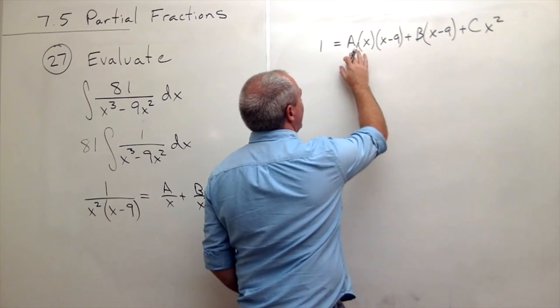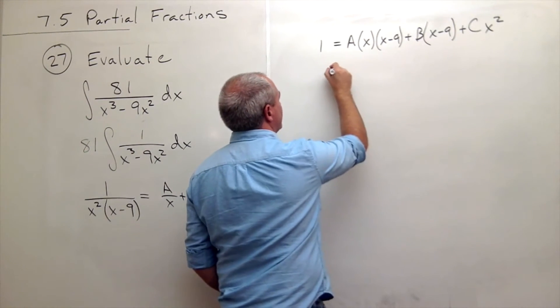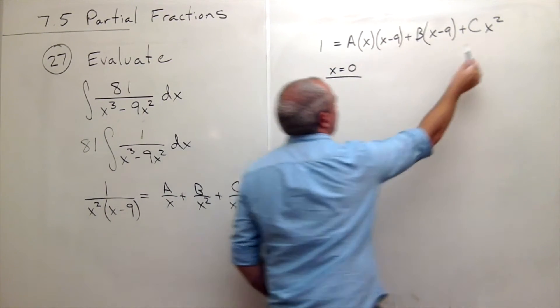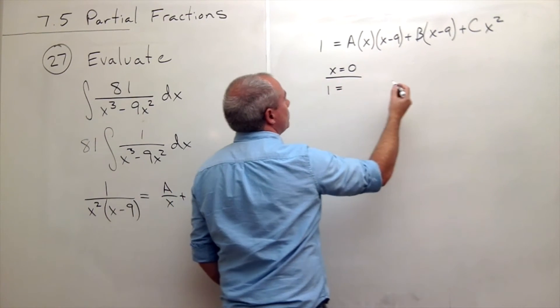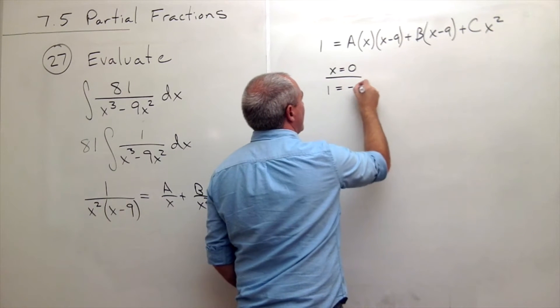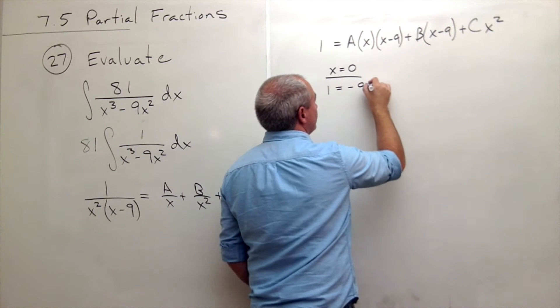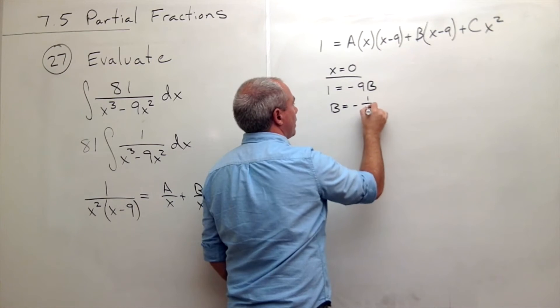If I could choose some different things for x, let's start out, let's let x equal 0. If x is 0, then this term is 0, and this term is 0. So I just get that 1 is equal to negative 9 times B, and B is equal to negative 1 over 9.